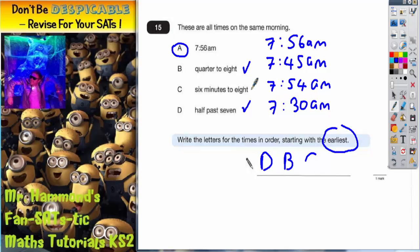And the last one, which is the latest, the only one left is going to be 7:56, which is A. And that's all the times sorted into order. You've got to put them in digital clock format first, and that makes it a lot easier.